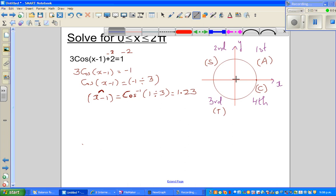So 1.23 would come somewhere here. So that's your reference angle. This is 1.23 radians in your first quadrant. Let me write this properly. This is 1.23 radians in your first quadrant.